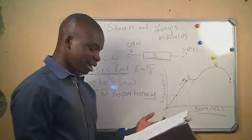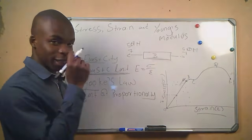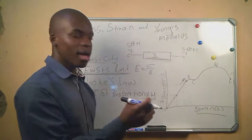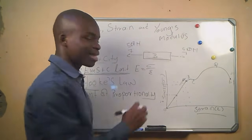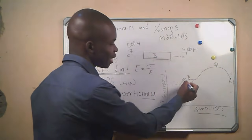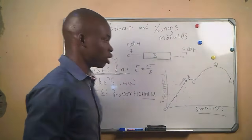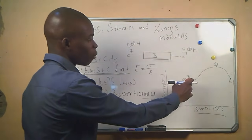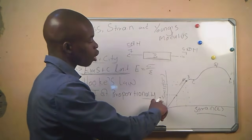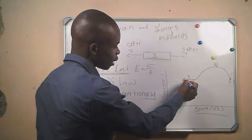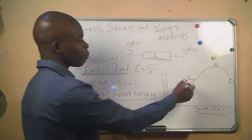Point A on the graph equals the limit of proportionality. The limit of proportionality is the point where the strain is no longer directly proportional to the stress causing it. From point A onward, the strain will no longer be proportional to the stress, and we call point A the limit of proportionality.